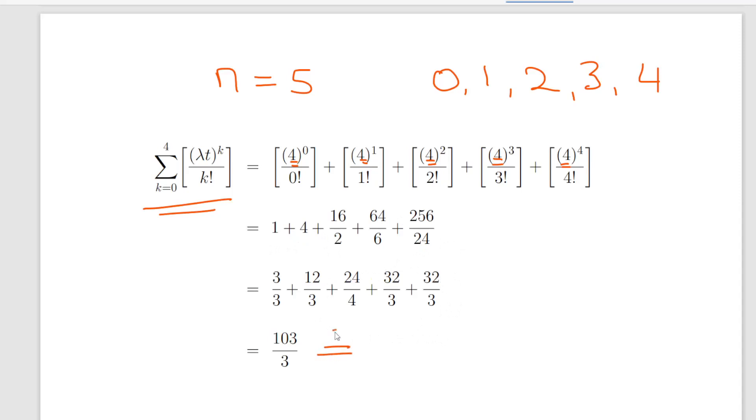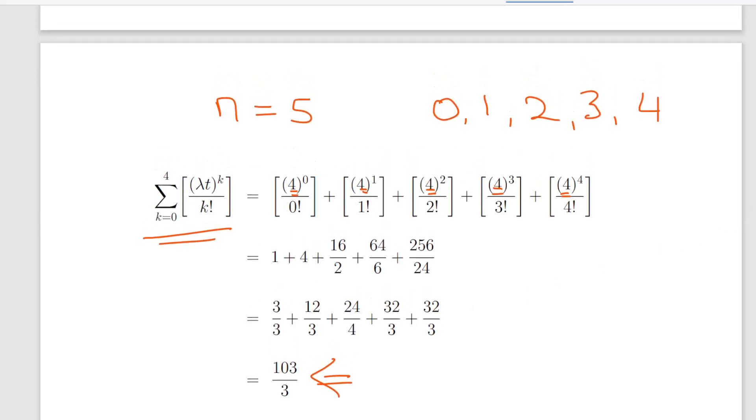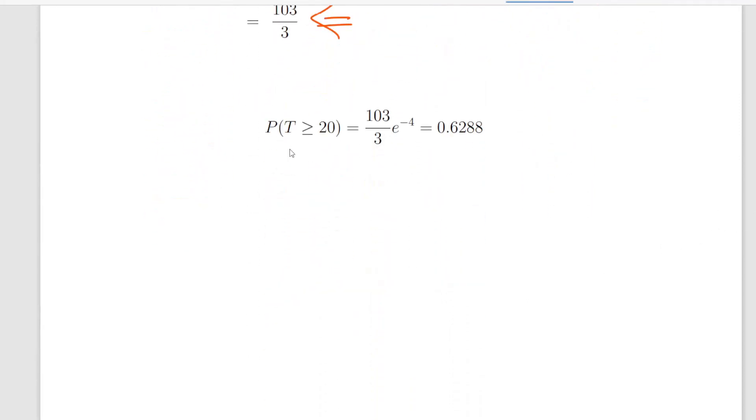Just piece it all together now. The probability of T greater or equal to 20 is 103/3 times e^(-4). A bit of calculator work and that should work out to be 0.62888, or 62.88% essentially. So that's it, that is the gamma distribution.